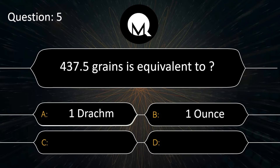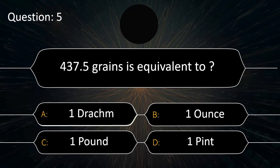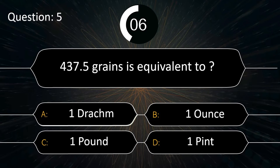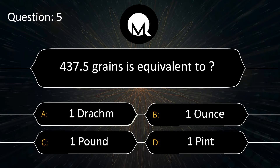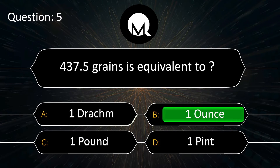437.5 grains is equivalent to: 1 drachm, 1 ounce, 1 pound, or 1 pint. The answer is 1 ounce.